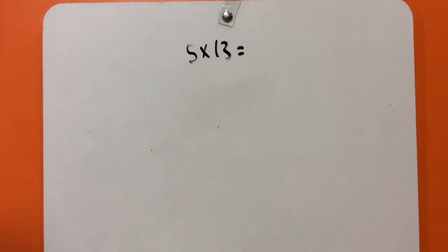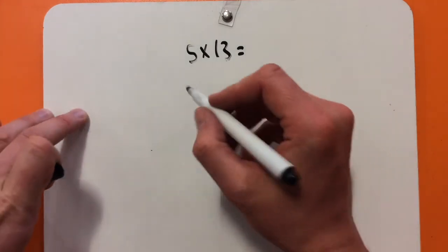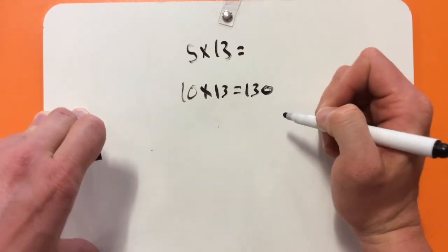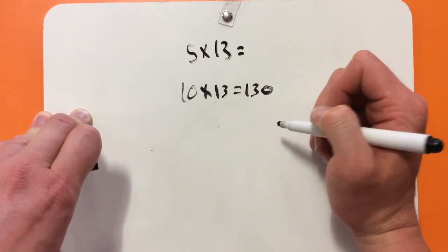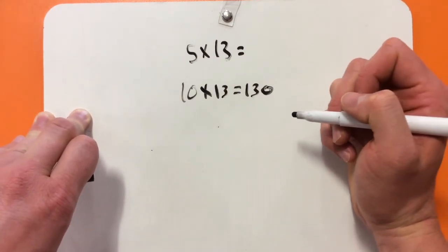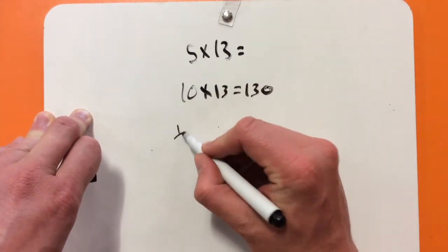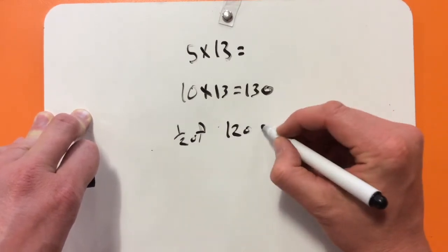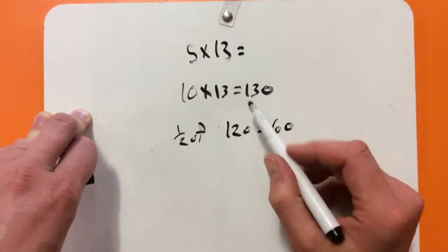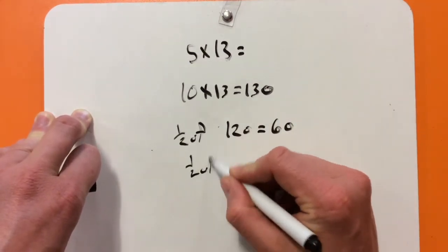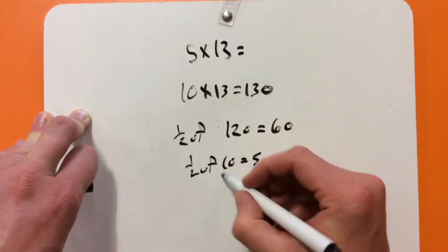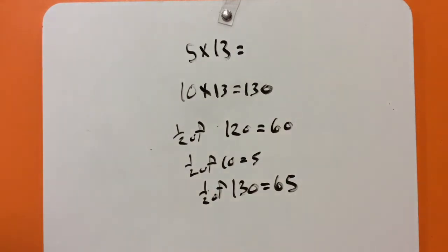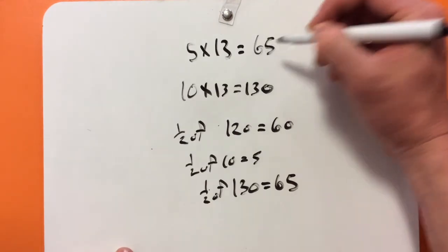Our last problem here is a little bit more difficult. We can easily figure out that 10 times 13 is 130, but when we're trying to find half of 130, it's a little more difficult because 13 doesn't go evenly into 2. So, let's look at 1 ten less. We know that half of 120 — half of 12 tens — is 6 tens, which equals 60. And that extra 10: half of 10 is 5. So, half of 130 is 65. So, 5 times 13 is 65.